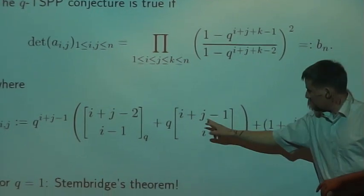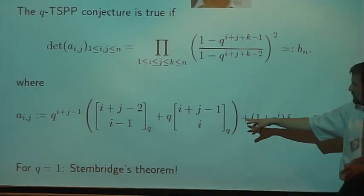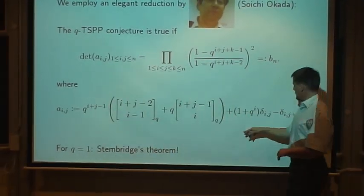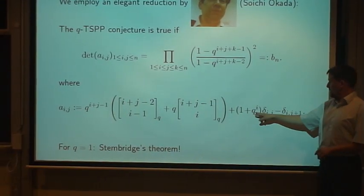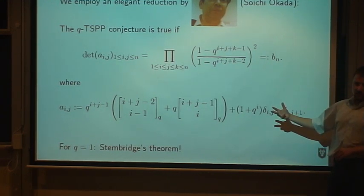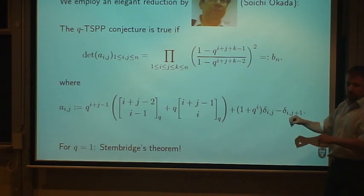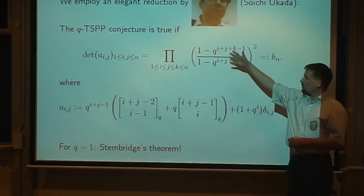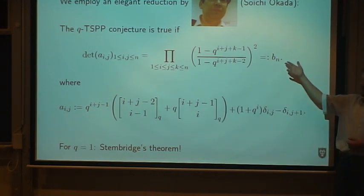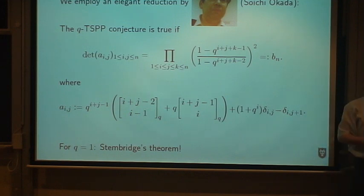The nice thing is, if we plug in q equals one, then the q binomial coefficients turn into standard binomial coefficients, and this q goes away. Also this goes away, and this gives a two, I guess. If you take the determinant of the matrix without q, then it's just numbers as entries. We get the corresponding formula for the standard counting case. This was also the trick that Stembridge used in 1995 to prove the first proof of the TSPP statement.